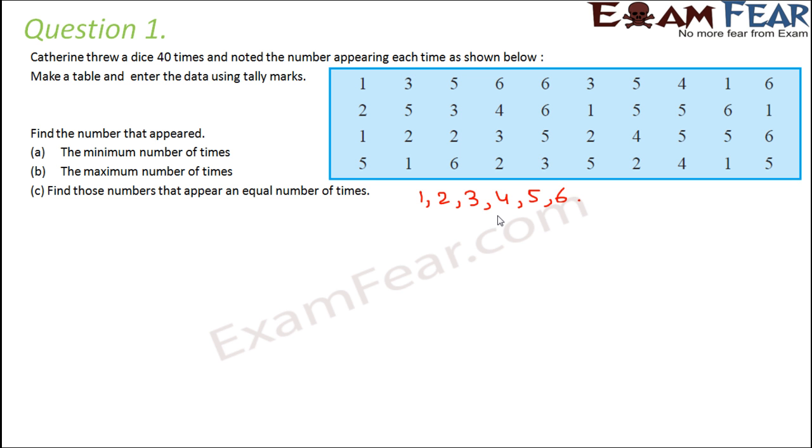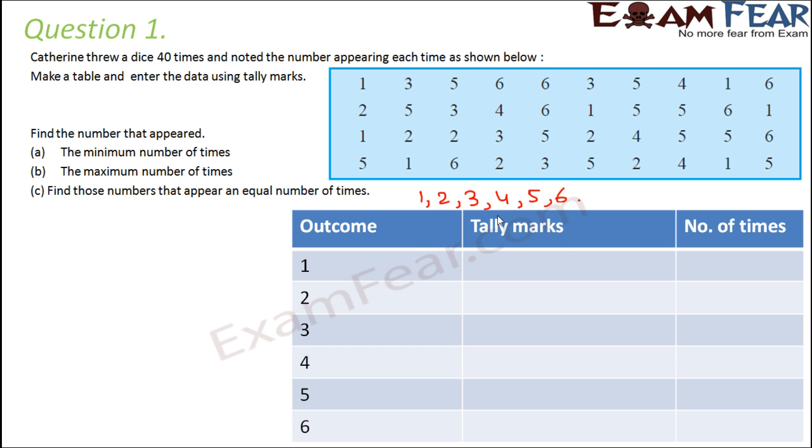Okay, so the table that will be formed would look somewhat like this. The possible outcomes are 1, 2, 3, 4, 5, 6.